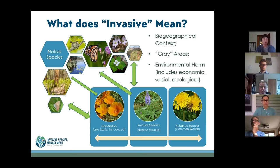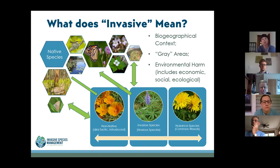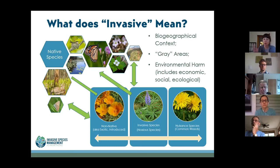Then we've got our invasive species — also called noxious species. These are the species we're really going to talk about and focus on; that's what APIP focuses on in its work. These are non-native, but they also have high threats to the environment, to ecosystem processes, to environmental concerns having to do with human health or economic viability of crops or activities.